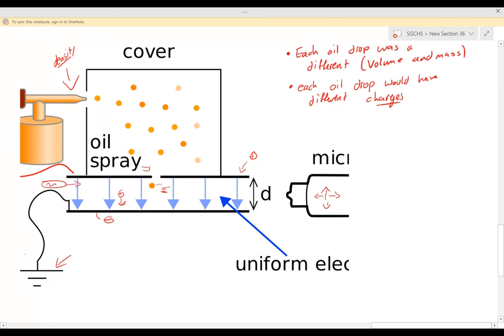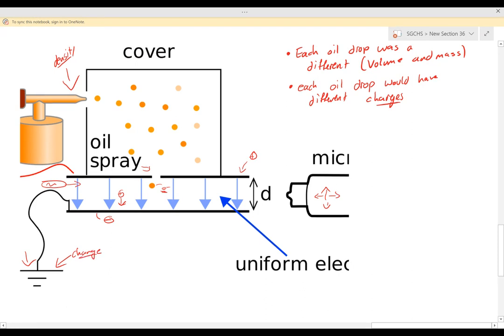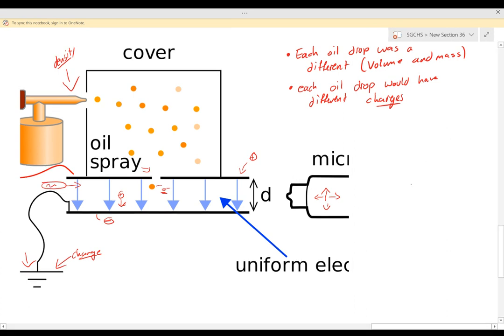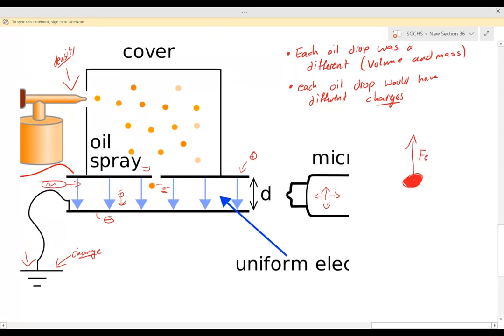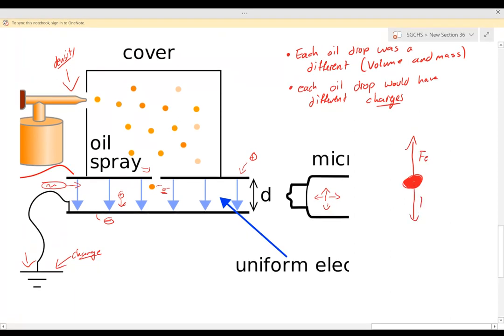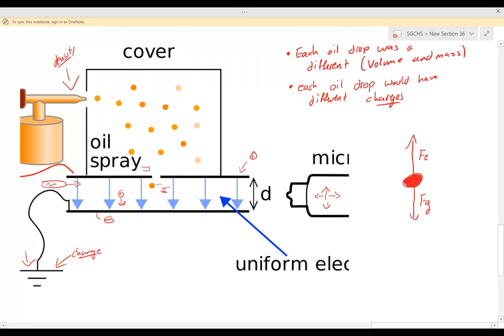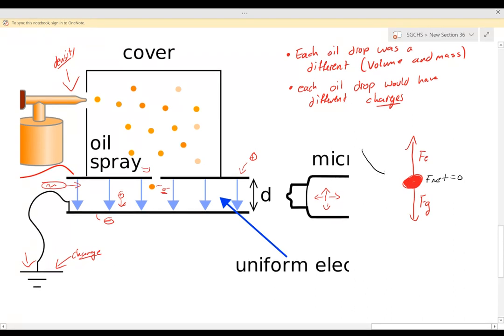So since he could change the voltage, a.k.a. changing the electric field strength, he was able to once in a while get an oil drop in this area that lined up with this microscope that had the same amount of electric force as the force of gravity acting on it. Now when this occurs, we get a net force of zero. This is why it's suspended, it's a floating oil drop.